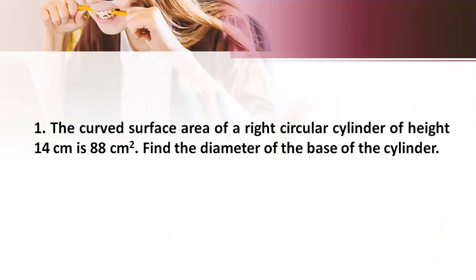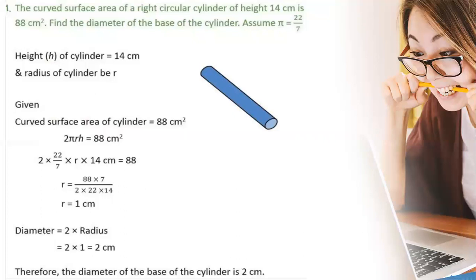Now let us go into the exercise problems. So let us go with the first problem. The curved surface area of a right circular cylinder of height 14 cm is 88 cm². We need to find the diameter of the base of the cylinder. In this problem we are given height h = 14 cm and curved surface area = 88 cm², and we need to find the diameter of the base. Let us represent the height as h = 14 cm and suppose the radius of the cylinder is r.